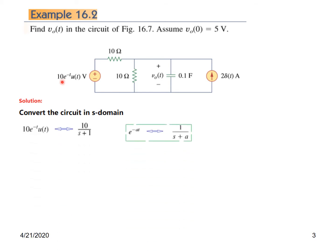The voltage source is 10e^(-t)u(t). Applying the formula L{e^(at)} = 1/(s - a), this transforms to 10/(s + 1). The current source is 2·delta(t), and since delta(t) transforms to 1 in the s-domain, 2·delta becomes simply 2.